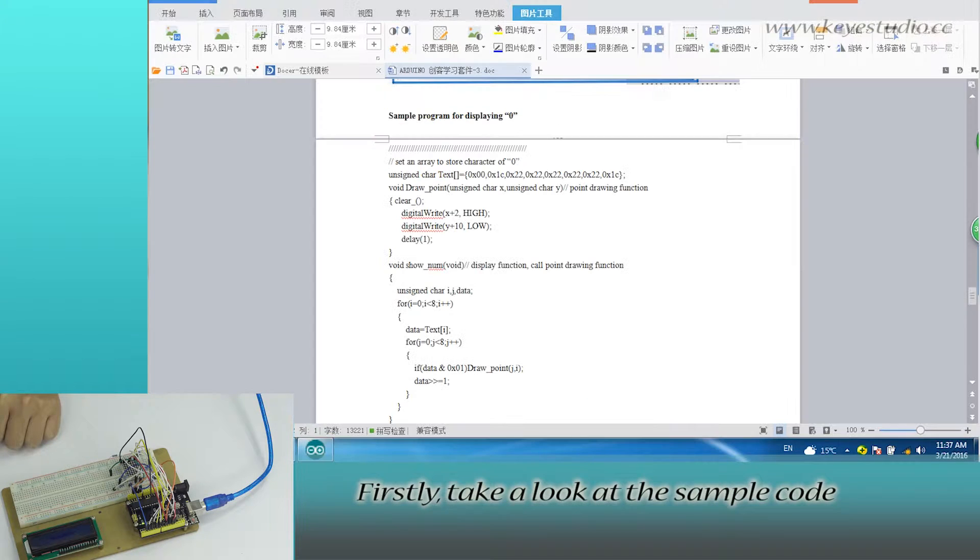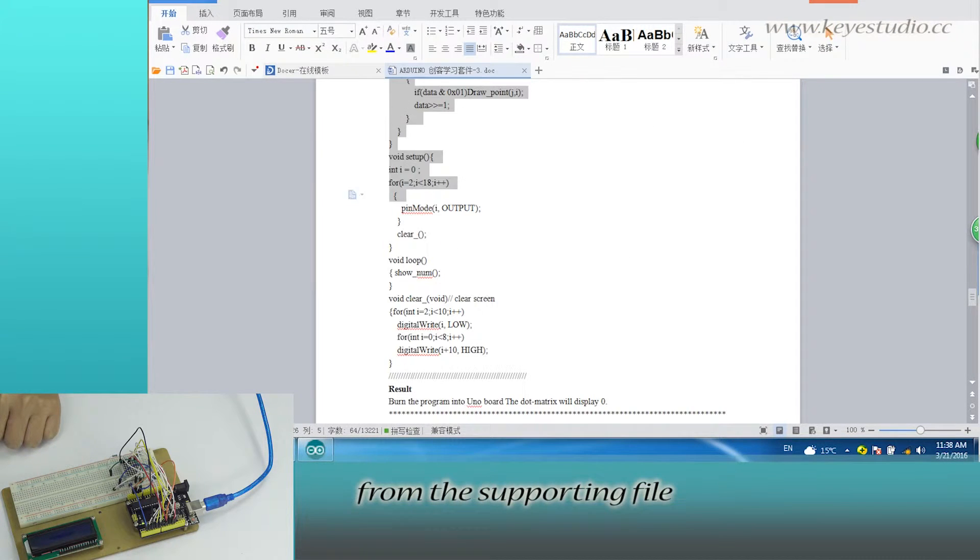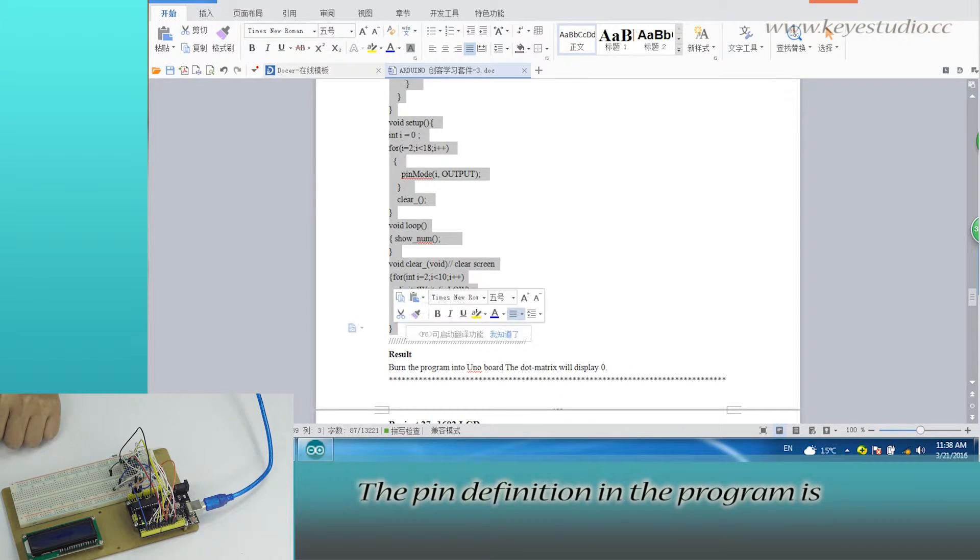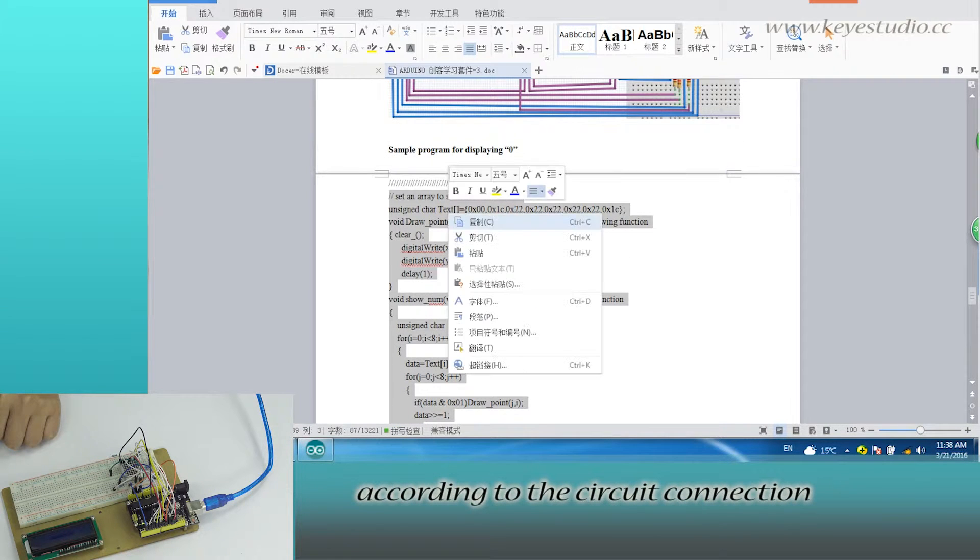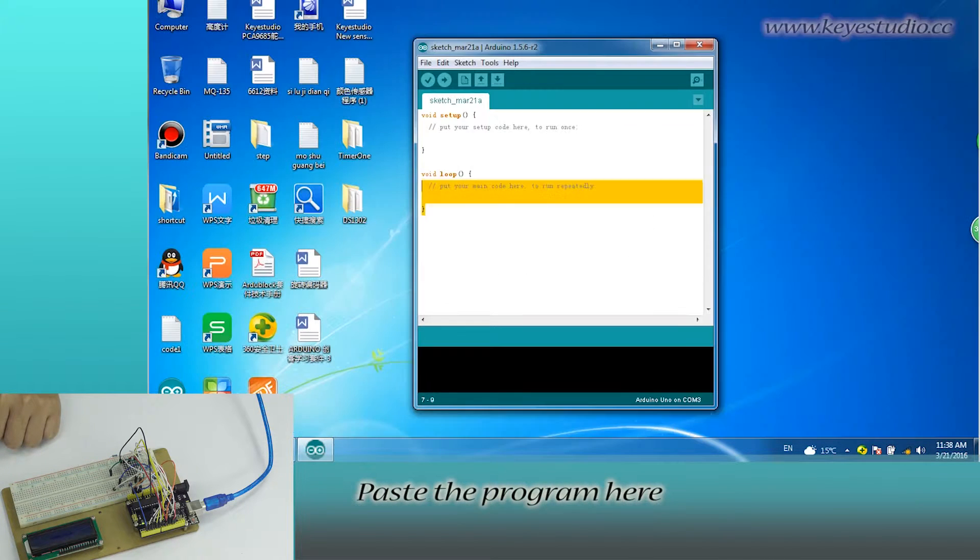First, take a look at the sample code. You can see no libraries are needed. Then, directly copy the program from the supporting file. The pin definition in the program is according to the circuit connection. Paste the program here.